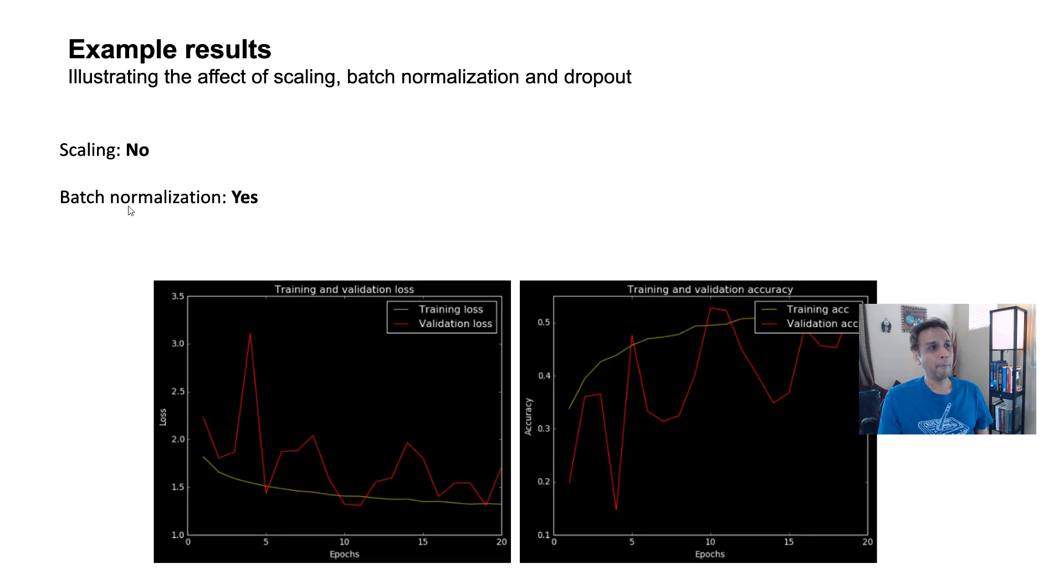Now I added batch normalization but no scaling. I'm not scaling here and only batch normalization, meaning my input values initially ranging from 0 to 255 and then the batch normalization kicks in. Now we are talking about something. Now you can see my training loss is better. My validation loss is doing something. Overall, it's trending in the downward direction, which is a good sign. Same thing with the accuracy.